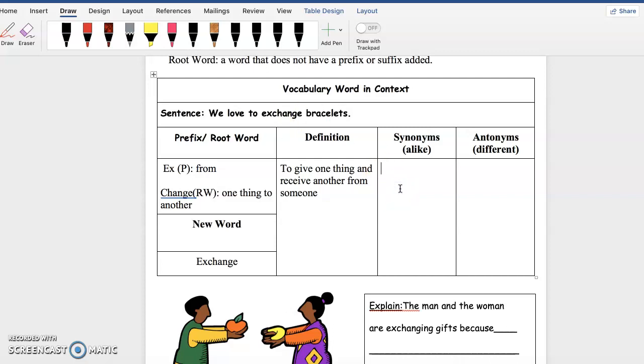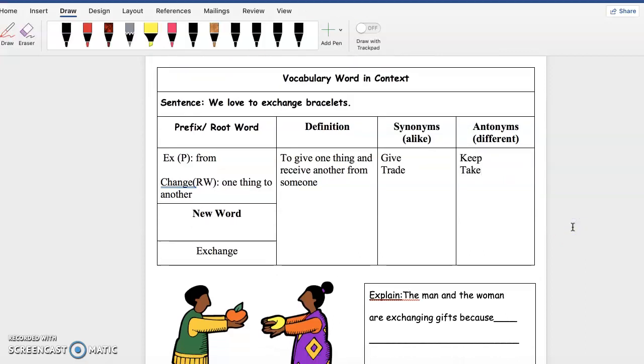Now let's think of the synonyms and antonyms for the word exchange. When I think of the word exchange, a synonym is a word that means the same. I would say to give something, right, or to even trade. Good. Now an antonym would mean the exact opposite. If you're not giving something, you are—good, I heard somebody saying it—you're keeping it or you're taking it, which we don't do. We don't take stuff.